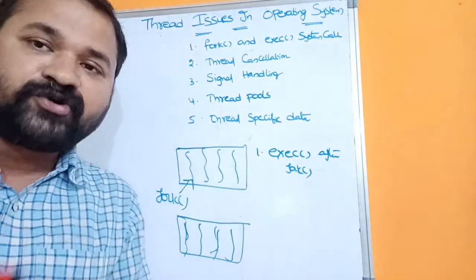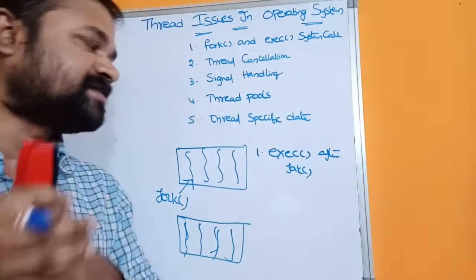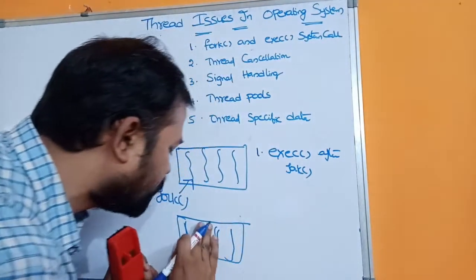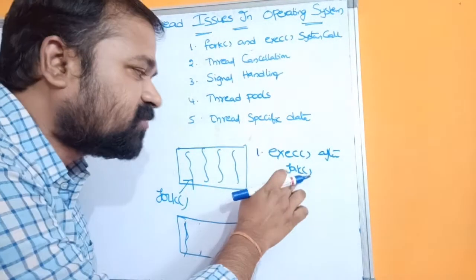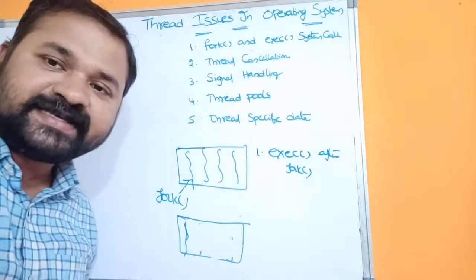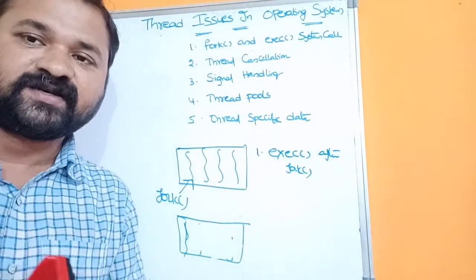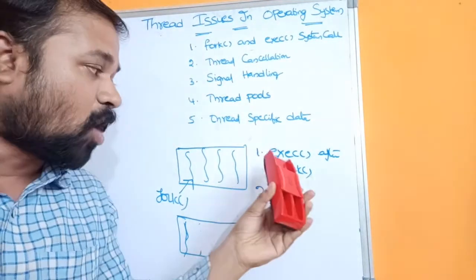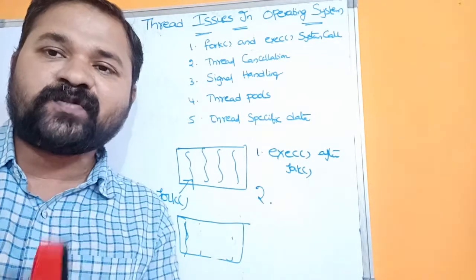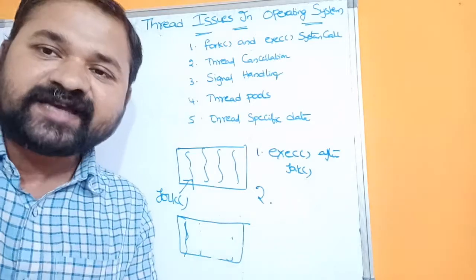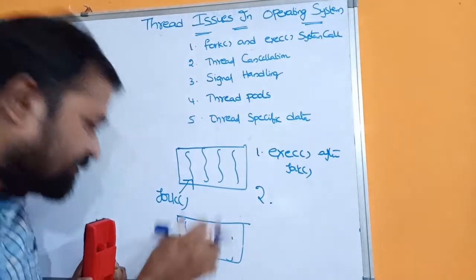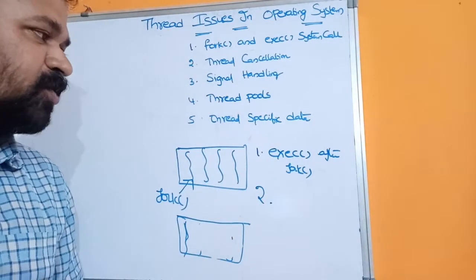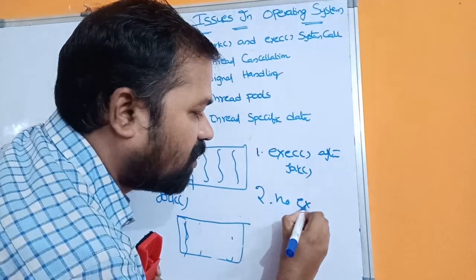The first option is when exec system call is used after fork. In this case, there is no need to create the new process with many threads — it is better to create the process with only one thread. Because after the fork, exec system call will replace this process with a new process. For example, if that new process contains 10 threads, then this process will contain all those 10 threads.